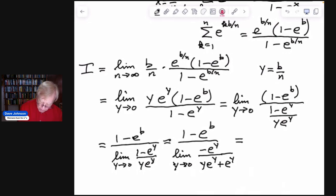And when we take the limit as y goes to zero, we get 1 minus e to the b divided by upstairs, we get negative 1 divided by and then this term here goes to zero and we get e to the zero which is 1. So we get a negative 1 downstairs.